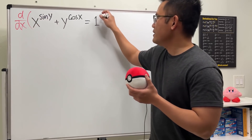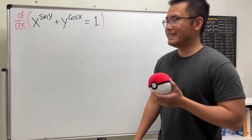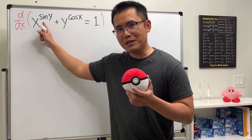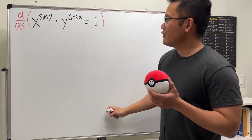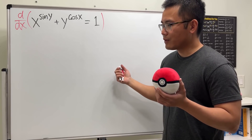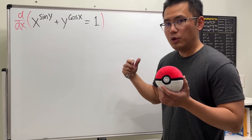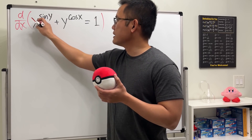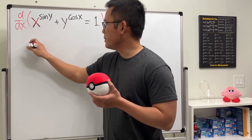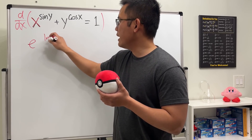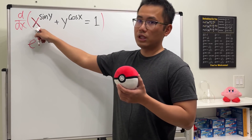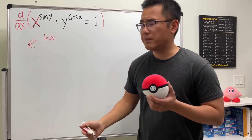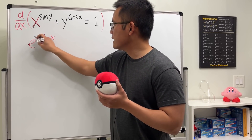We'll use implicit differentiation to find dy/dx. The challenge is that x is the base and sine y is the power — both are functions. It's a better idea to rewrite x as e to the ln x power, since e^(ln x) = x. Then raising that to the sine y power is the same as multiplying the exponent by sine y, giving e^(sin y · ln x).